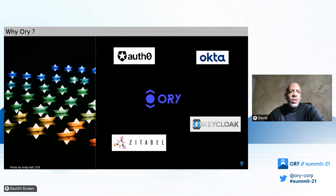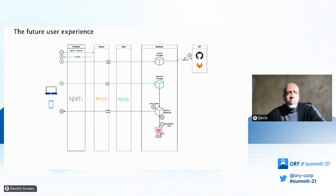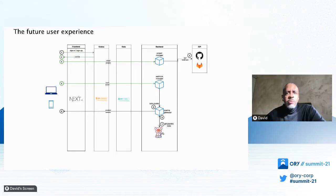By using ORI, we aim to achieve this new architecture. As you can see, there are fewer internal calls. All calls will go through Kratos for authentication and Keto for authorization. Moving throughout this new architecture and these tools brings many opportunities to us and our customers.